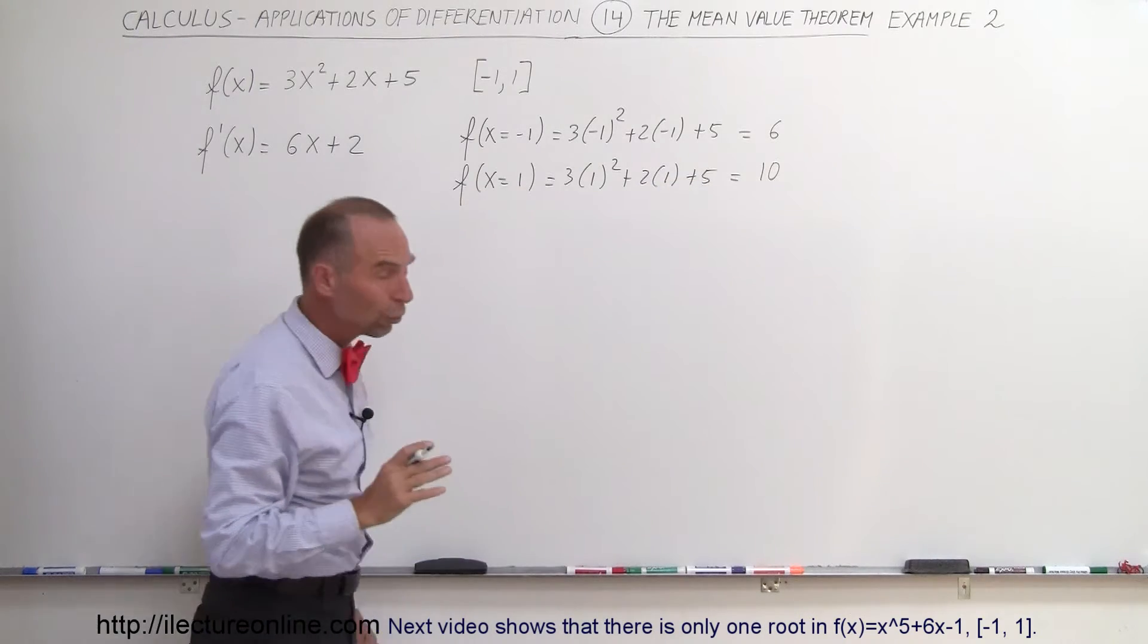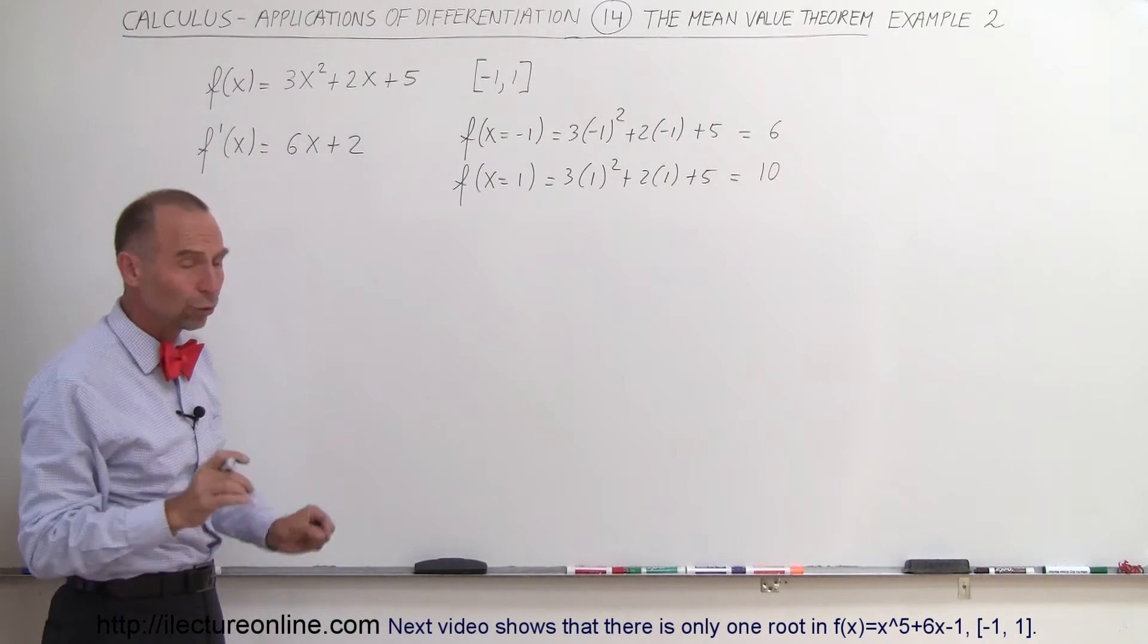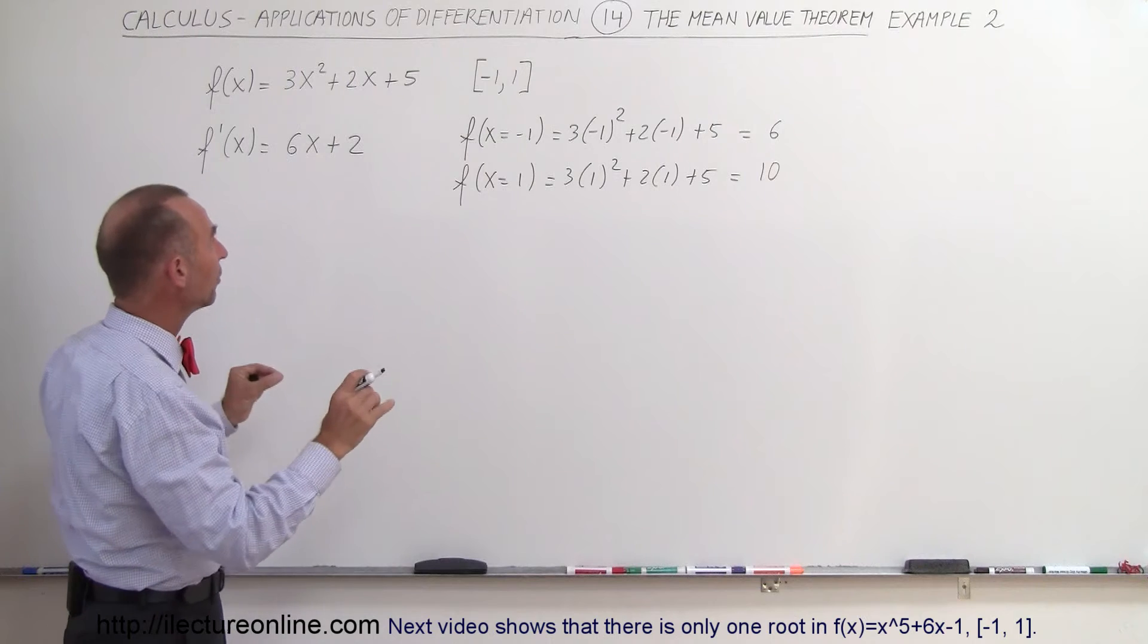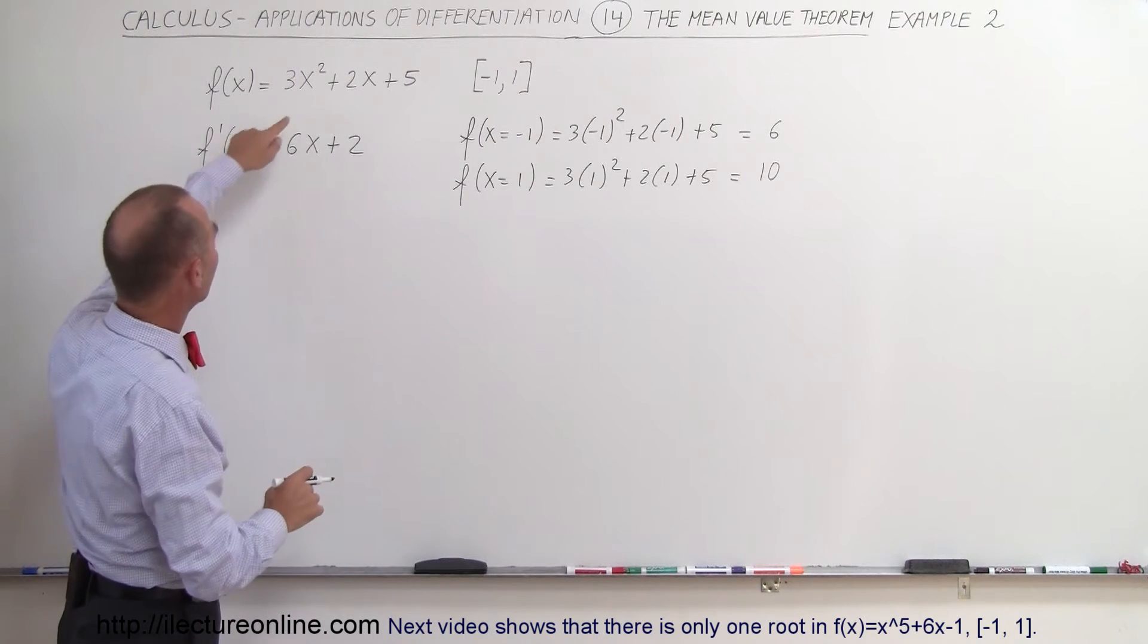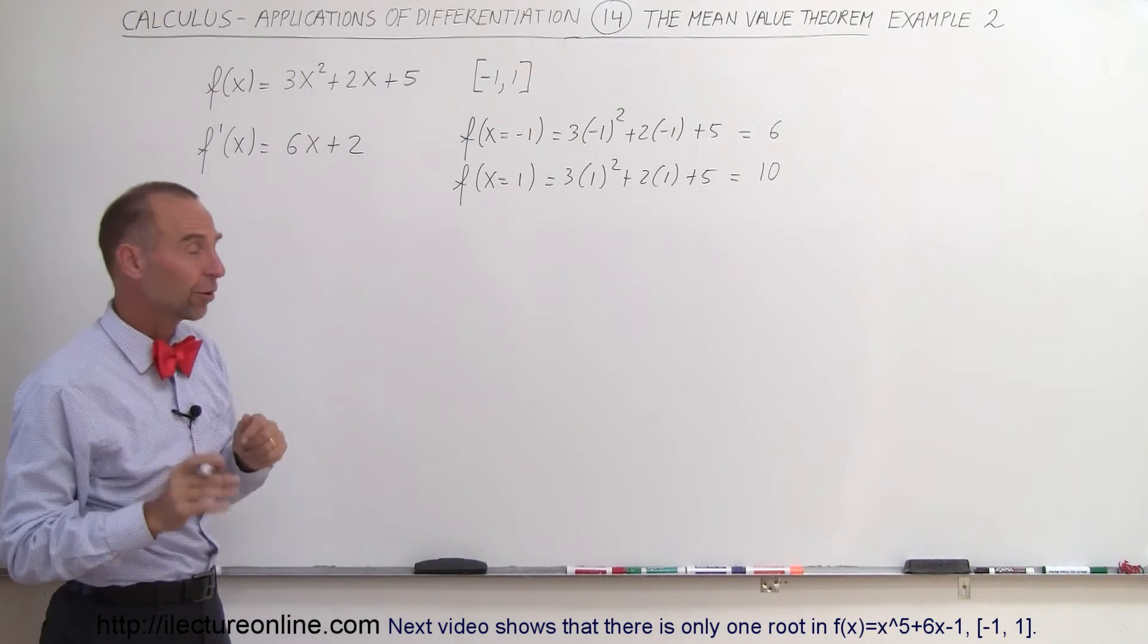Alright, so those are the corresponding y values. So the two points on the graph for those particular values for x are as follows.